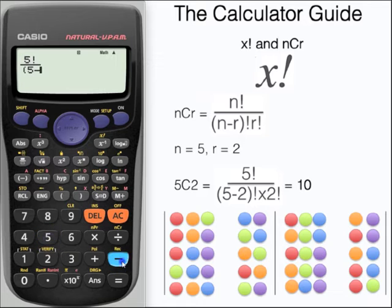So you can input the formula as such. Just be careful to use your fraction button, your replay button to navigate around, and the factorial button. Here we have our answer of 10. We can see all the different combinations displayed below with the colored balls.